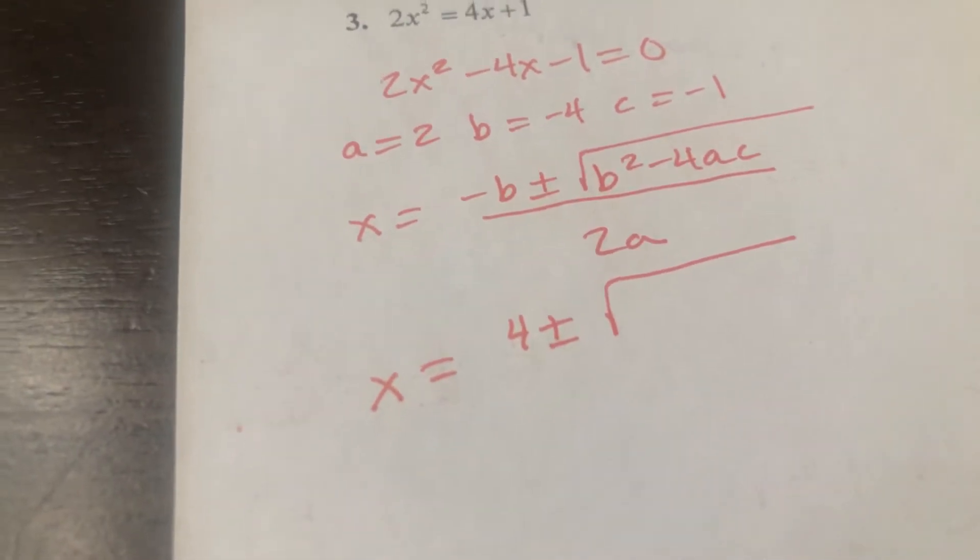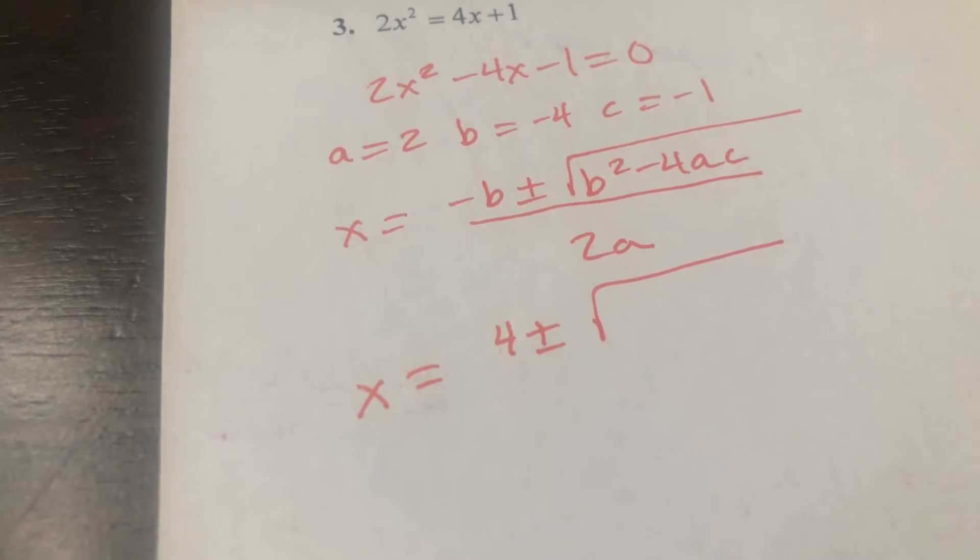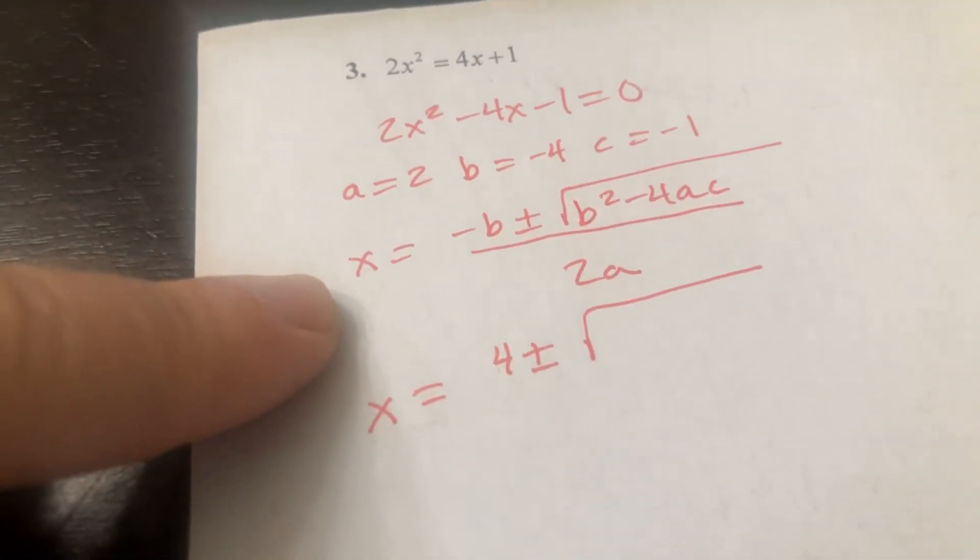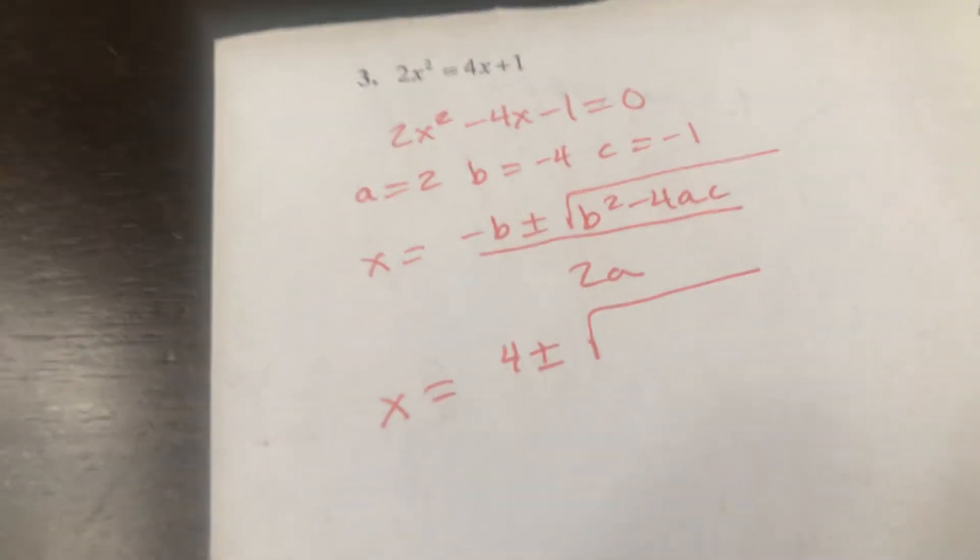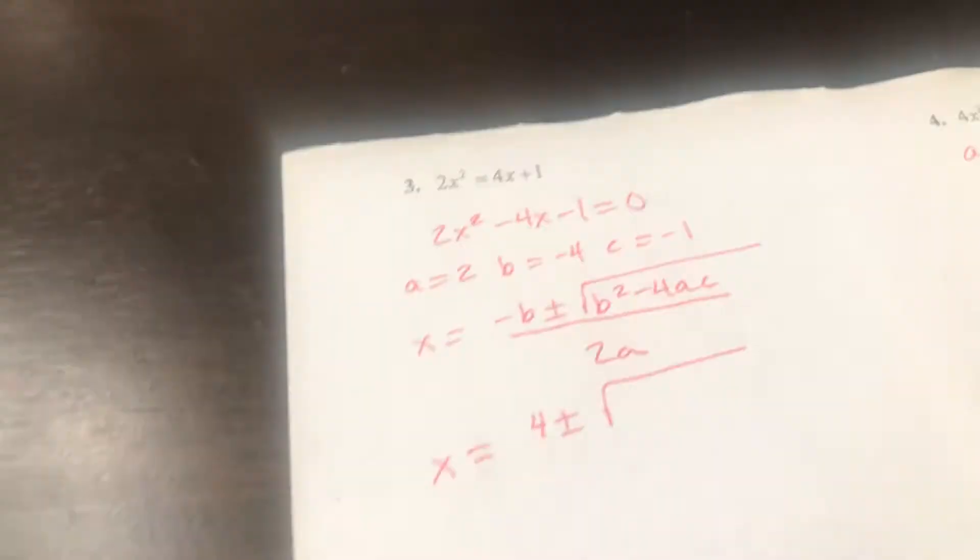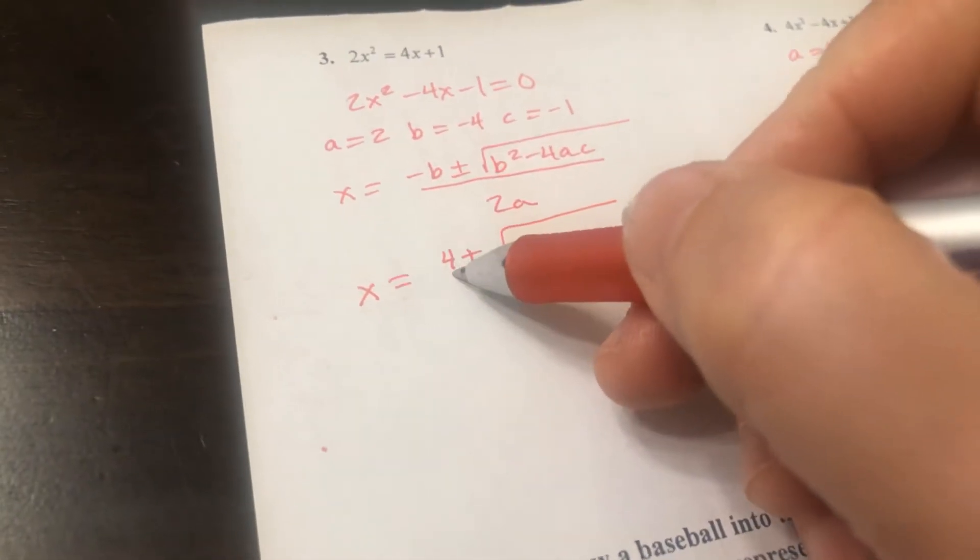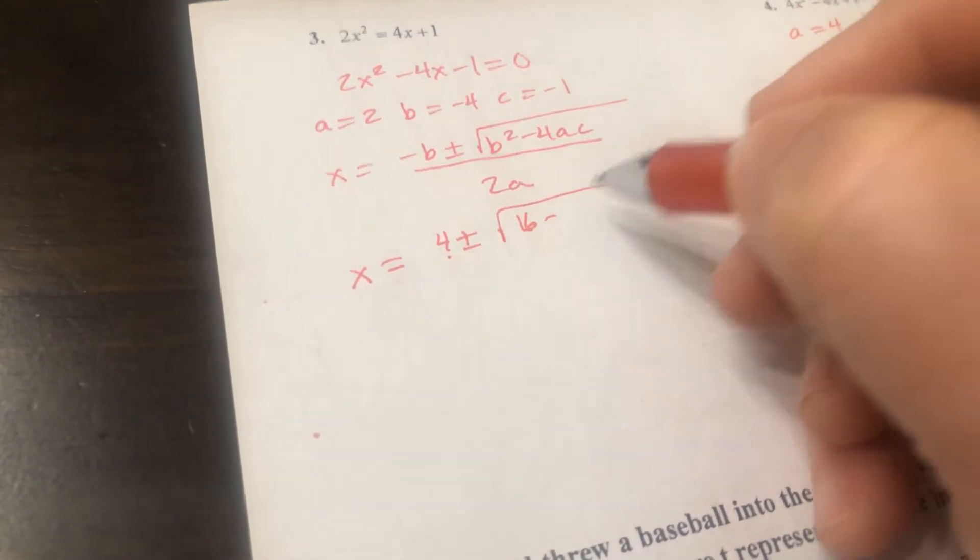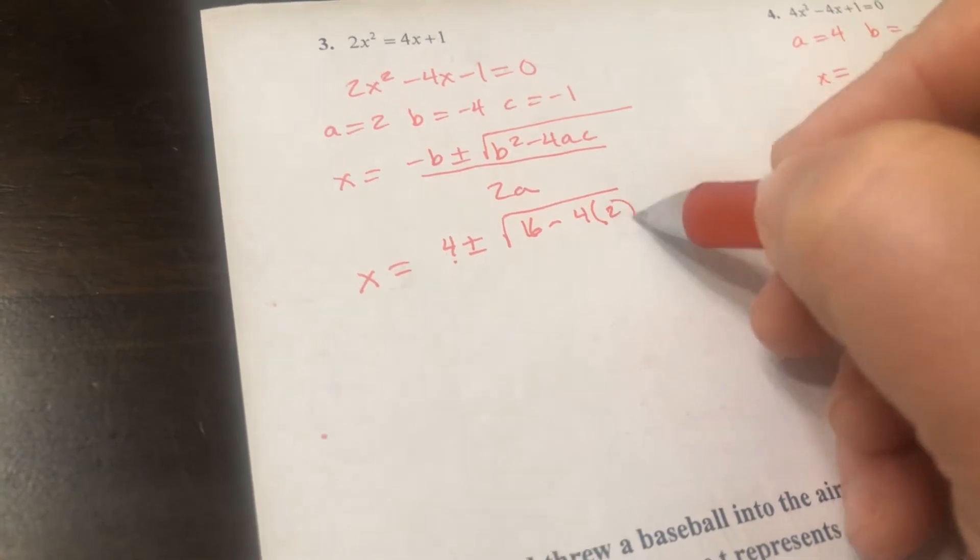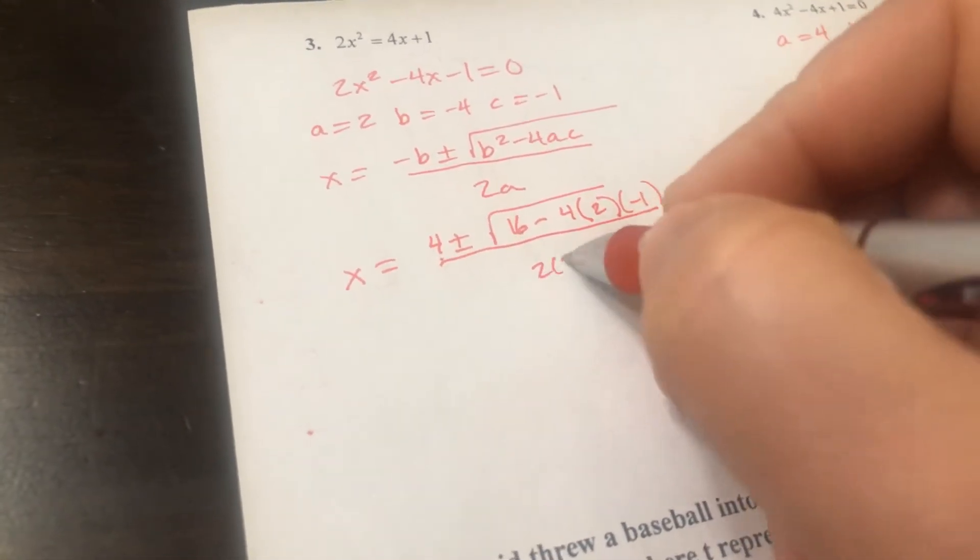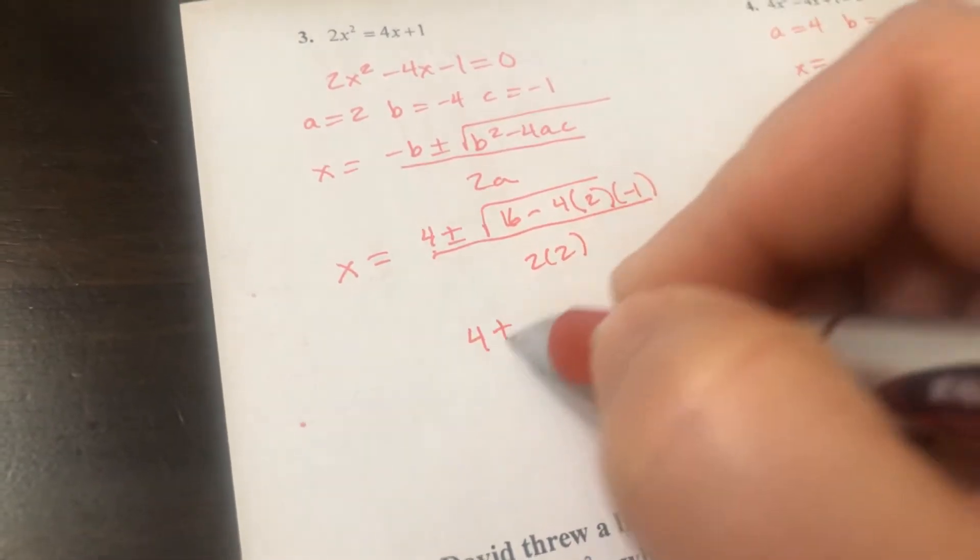So that gives me 2x² - 4x - 1. So the a value is 2, the b value is negative 4, the c value is negative 1. I have written the quadratic formula down, and so now it's what we call plug and chug. So let's plug these numbers in. And so that becomes 4, so b squared is 16 minus 4 times an a value of 2 times a c value of negative 1 all over 2 times 2.